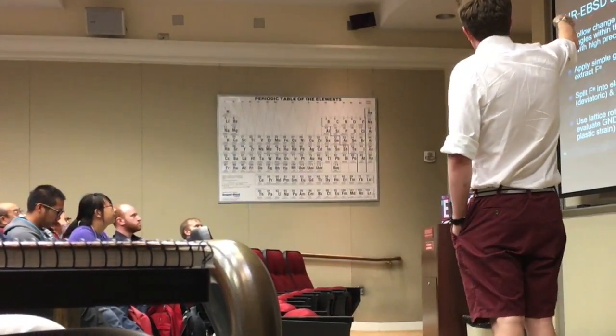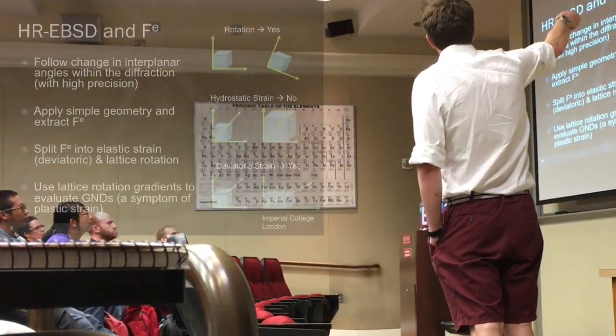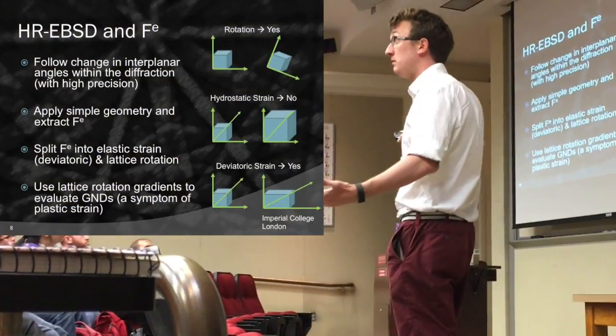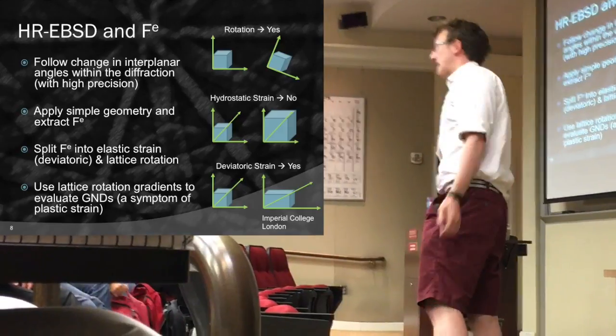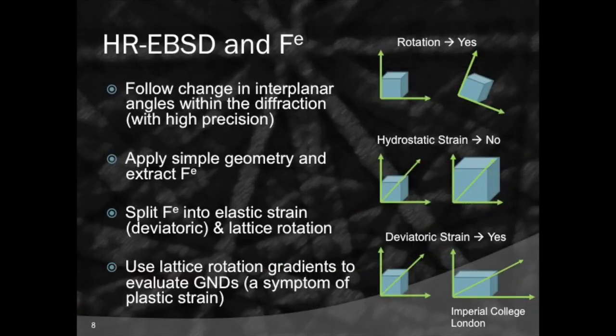When we do HR-EBSD and access the deformation gradient F_e, we can access the rotation and how the diffraction pattern changes shape. However, with EBSD, if we apply a hydrostatic strain — changing the object's volume — we cannot easily access that, because it does not change the interplanar angles; it only slightly changes the positions and widths of the bands, which we're not very good at measuring.